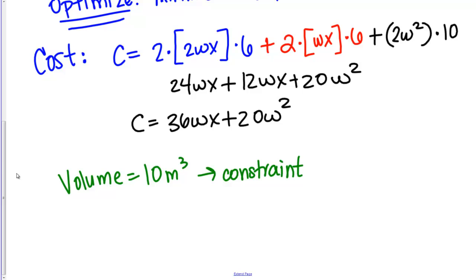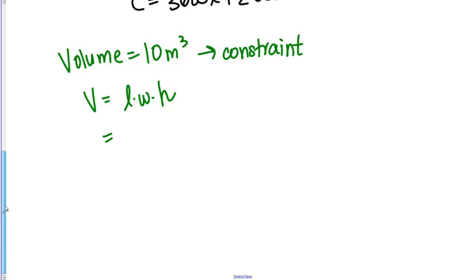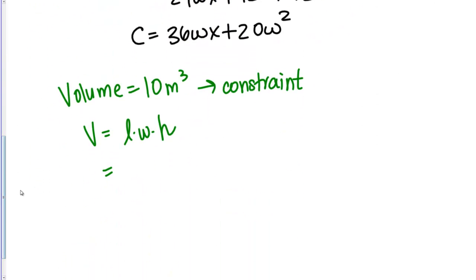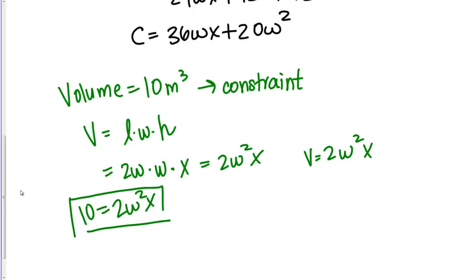Let's write the constraint in terms of our variables. Volume in general is length times width times height. Using our variables, the length is 2W, the width is W, and the height is X, so volume equals 2W times W times X, which is 2W²X. We want our volume to actually equal 10, so our constraint equation is 2W²X = 10.